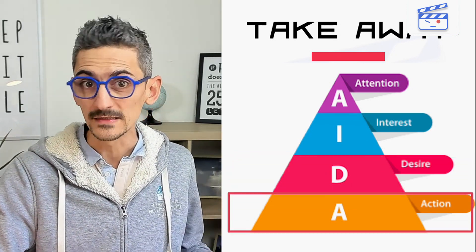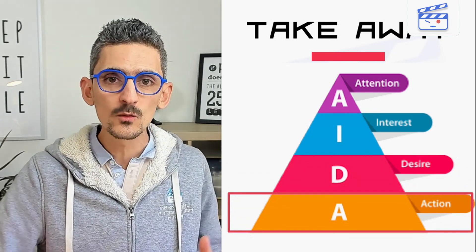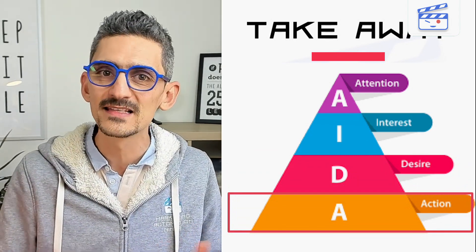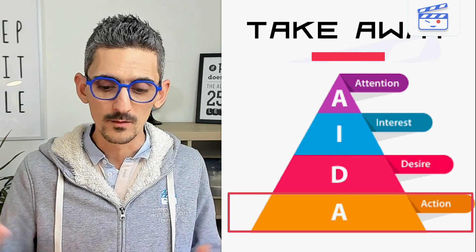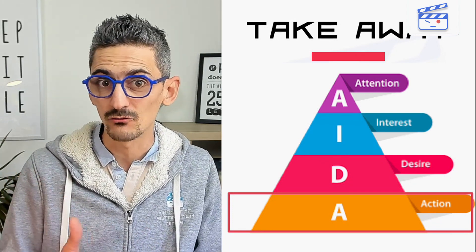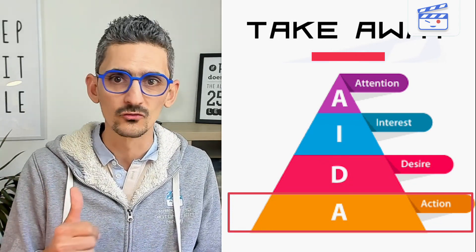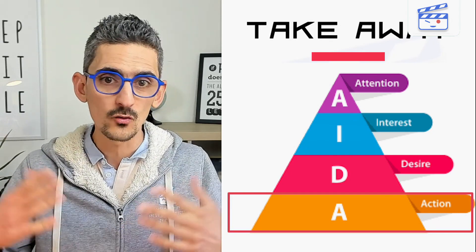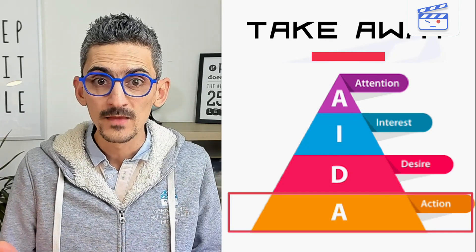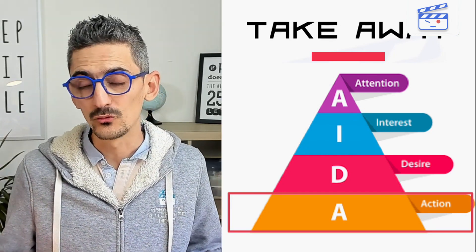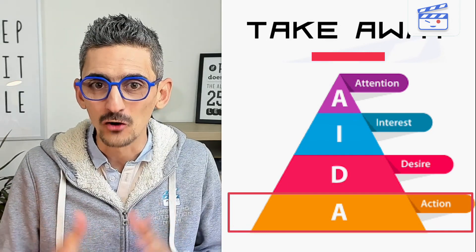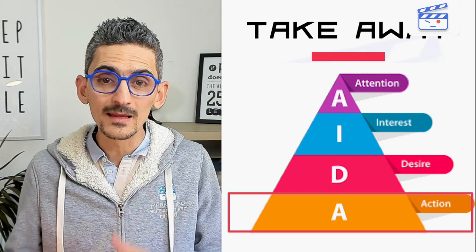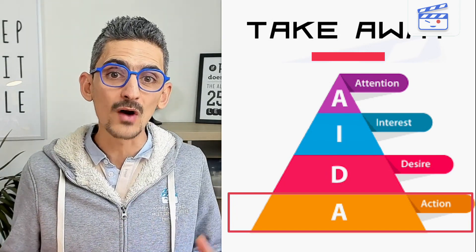The last step is Action. The action phase is usually where we use FOMO — the fear of missing out — letting them know that if they don't take action right now, they might lose a bonus, a discount, a meeting with you, or whatever you have to offer. It's both a logical and emotional reason to act now.